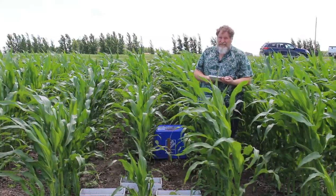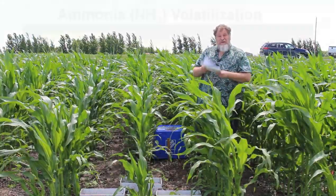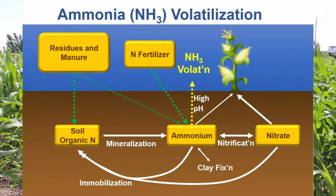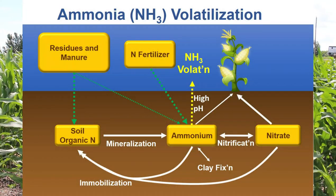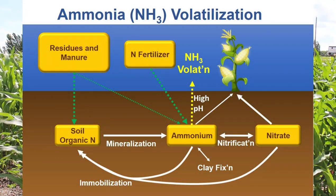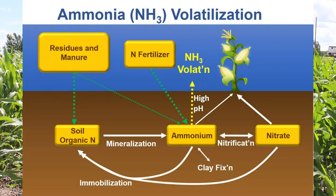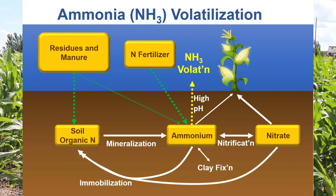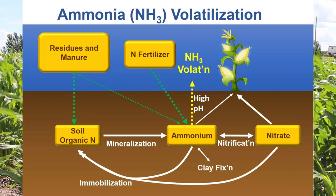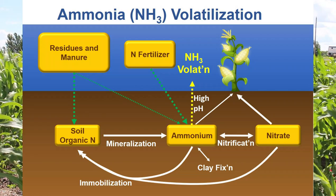Ammonia is also environmentally important. Once it reaches the atmosphere it can be converted to nitrous oxide, a greenhouse gas. It can also be deposited back onto land surfaces and natural systems like forests, effectively fertilizing them. Those systems are not adapted to that nitrogen, so it changes their ecology. We usually think of ammonia in agriculture as coming from livestock systems — barns, manure storages, lagoons — but it also occurs in cropping systems from nitrogen fertilizer applications.